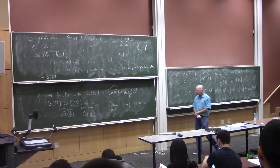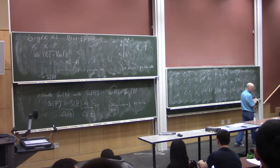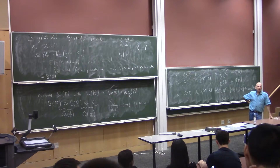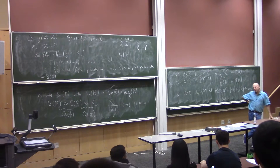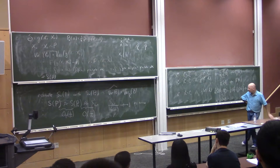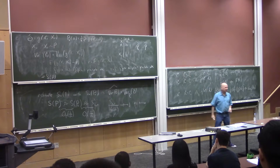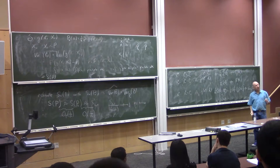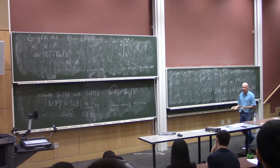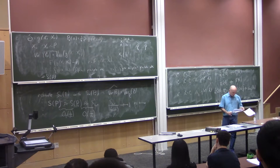To see how useful this is: if you want the standard error of the median, computing the variance of the median analytically is not easy — even if I told you the distribution, it's complicated and the formula has unknown quantities. But with the bootstrap you just know how to do it. Similarly, computing the variance of the MLE via Fisher information could be very hard — but now you can bootstrap it. Very general, very simple, very easy.